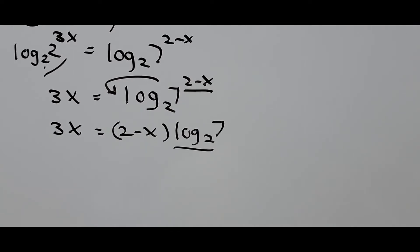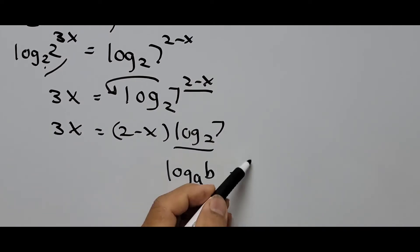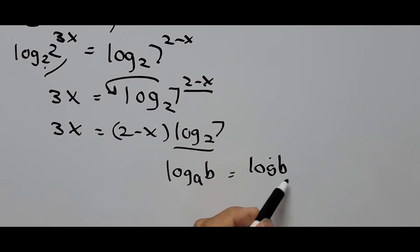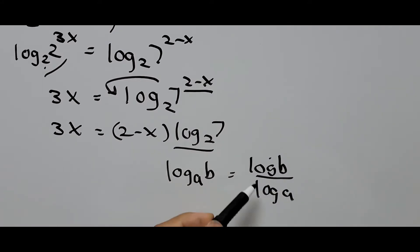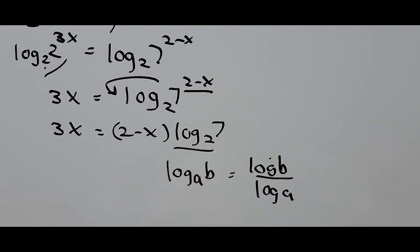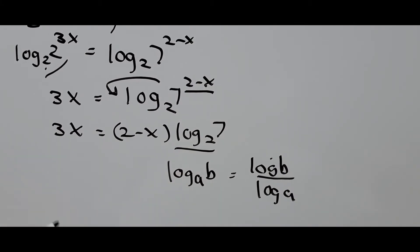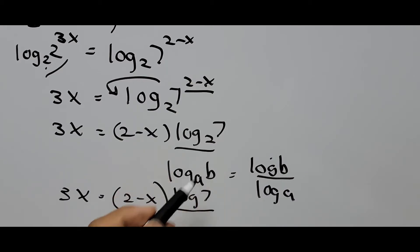We have to change the base of that logarithm. The change of base formula states that log base a of b equals log(b) divided by log(a). The 'log' here is the common log — base 10 — even though the base is not shown explicitly. If you don't see any base, it automatically means base 10. Applying this, log base 2 of 7 becomes log(7) divided by log(2).